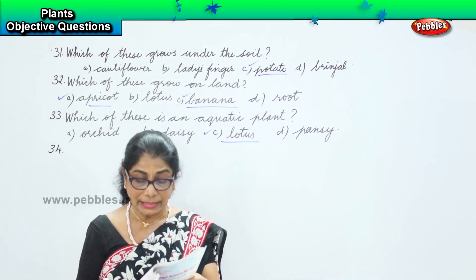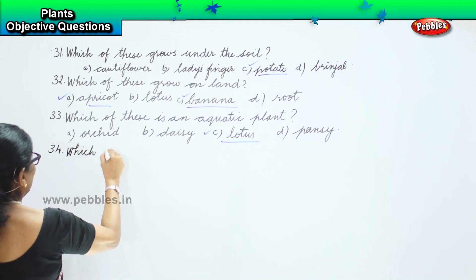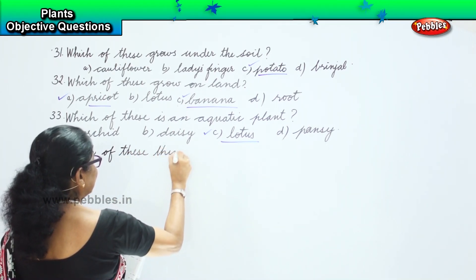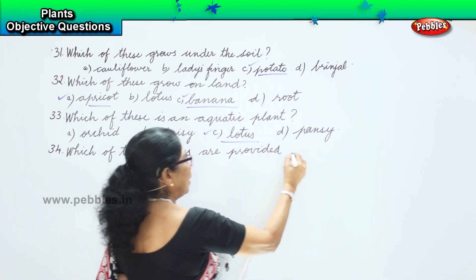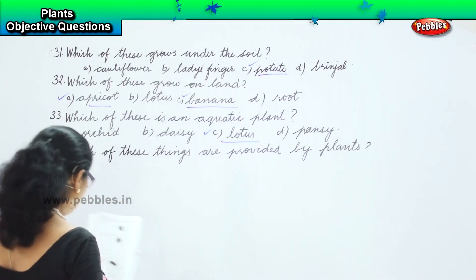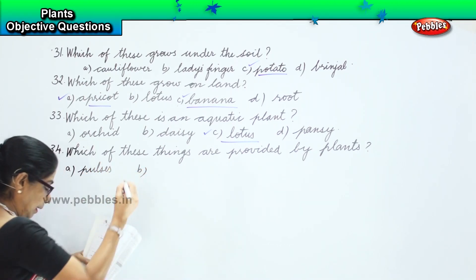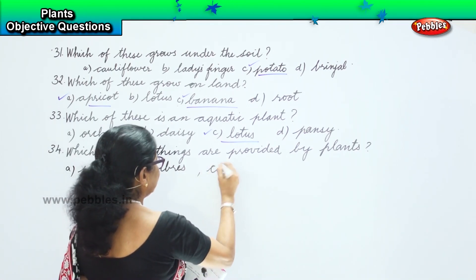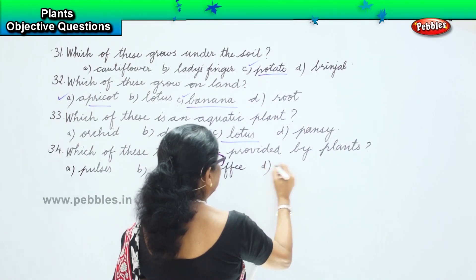The next question: which of these things are provided by plants? Option A: Pulses. Option B: Fibers. Option C: Coffee. Option D: Nuts.